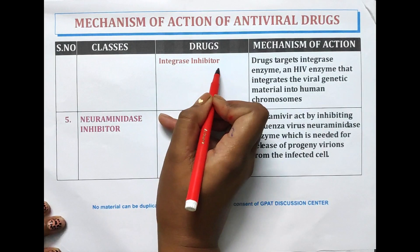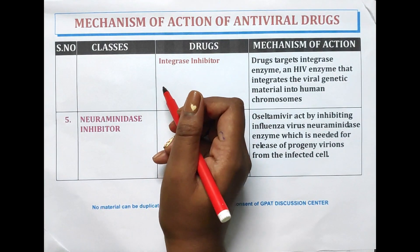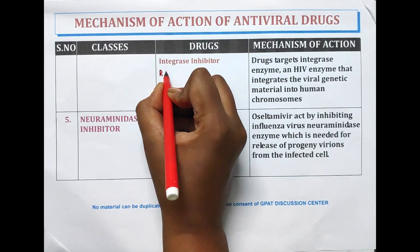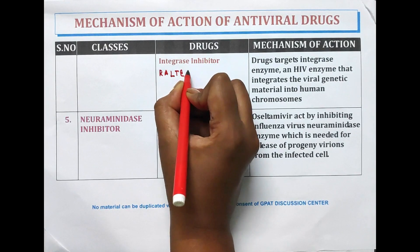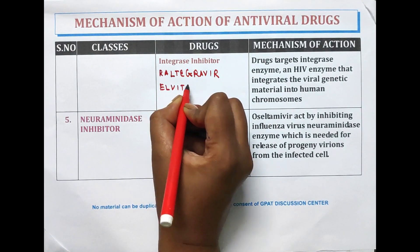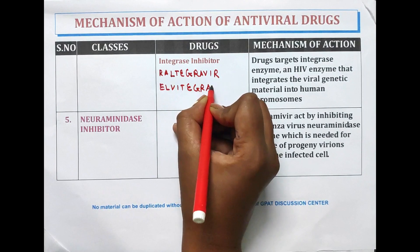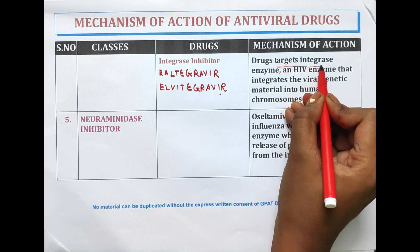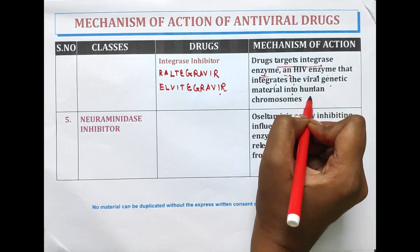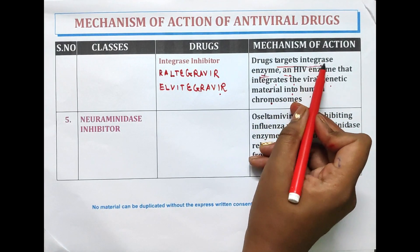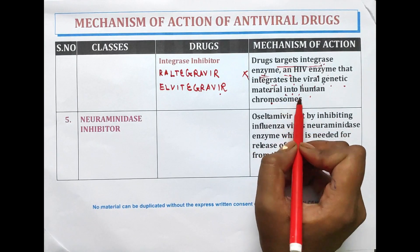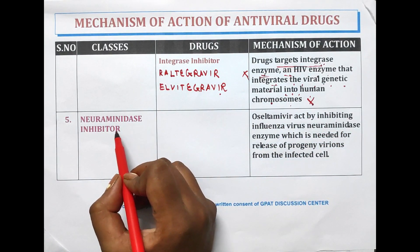Integrase inhibitors are also antiretroviral drugs. This class includes raltegravir and elvitegravir. These drugs directly target the integrase enzyme — an HIV enzyme that integrates the viral genetic material into the human chromosome. When the integrase enzyme is inhibited, integration of viral genetic material into the human chromosome is inhibited.